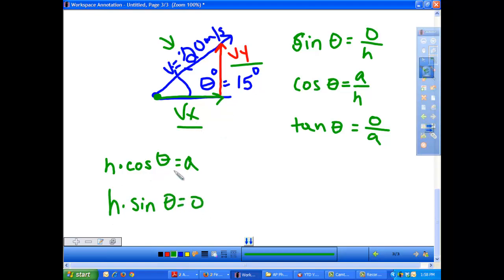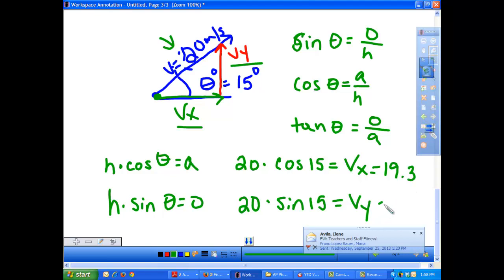So, for this one, with my picture, I would have 20 times cosine of 15. That's going to get me my horizontal speed. And 20 times sine of 15 is going to give me how fast my projectile is traveling vertically. So, when you do these, make sure that your calculator is set in degrees and not in radians, or you will get the wrong answer. So, my horizontal speed is about 19.3, and my vertical speed then is going to be 5.2.